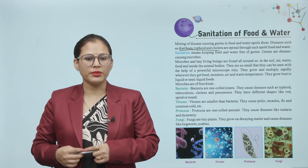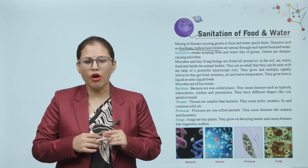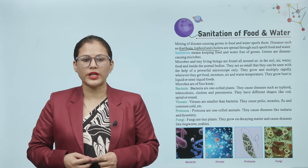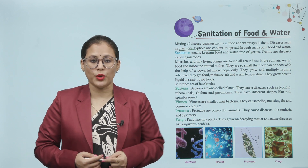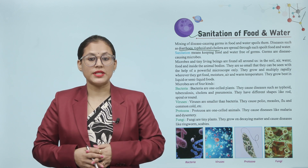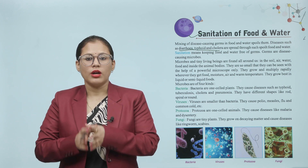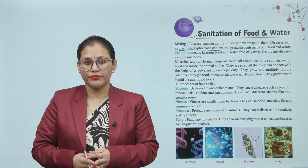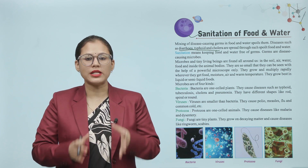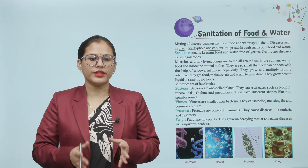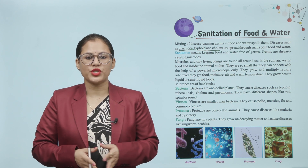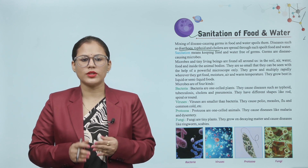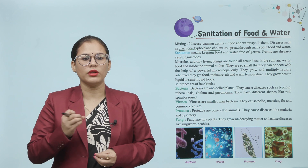Microbes and tiny living beings are found all around us — in the soil, air, water, food and inside animal bodies. They are so small that they can only be seen with the help of a powerful microscope. They grow and multiply rapidly wherever they get food, moisture, air and warm temperature. They grow best in liquid or semi-liquid foods.